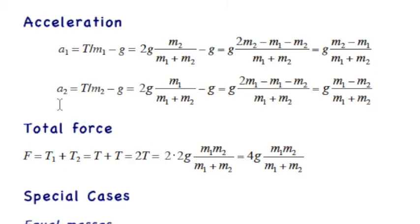Doing exactly the same kind of math for the acceleration of particle 2, we get almost the same result. Notice that what I got here was g times m1 minus m2 over m1 plus m2. This is the exact negative of what was here, which is what we expect, so that's good.